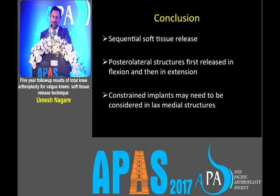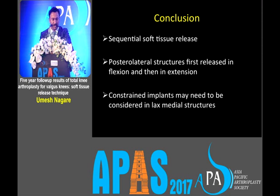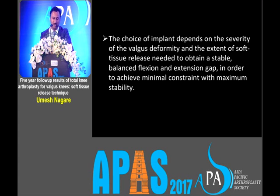In conclusion, sequential soft tissue release should be followed in a sequential manner for the valgus knee. Posterolateral structures should be released first in flexion, then in extension, assess the requirement, and release again as needed. Constraint implants may need to be considered with lax medial structures. The choice of implant depends on the severity of valgus deformity, extent of soft tissue release needed, and achieving equal flexion-extension gap to attain minimum constraint with maximum stability.